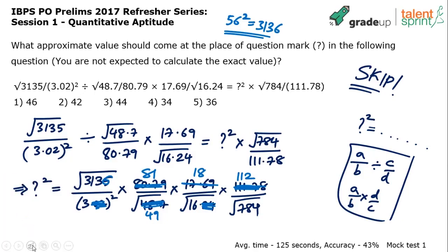I'll change it as follows. So, this is 56 square root of 3136 divided by the denominator as 3 square, which is 9 multiplied by 81 as it is. Square root of 49 in the denominator makes it 7. And 18 as it is again. Then square root of 16 is 4. Into 112. And what is square root of 784? 28. 28 square is 784.